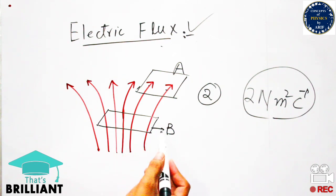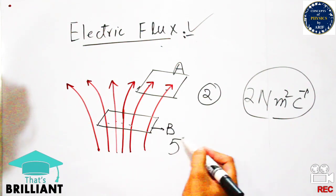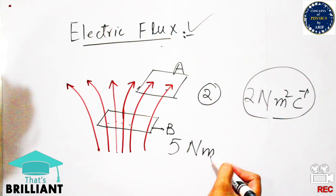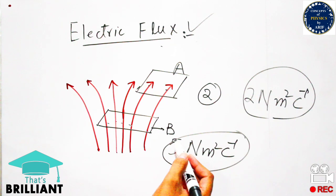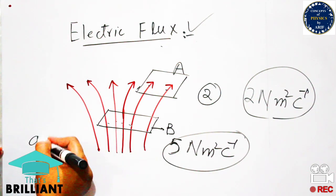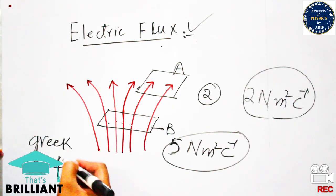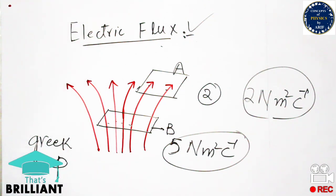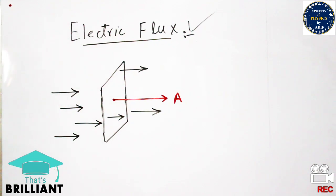In region B, five electric field lines are passing through this area, so the electric flux there is five, in units of newton meter squared per coulomb. Similarly, we have seen two basic cases related to electric flux. The electric flux is represented by the Greek letter phi (φ), which is shown as theta or phi — we will generally use phi.